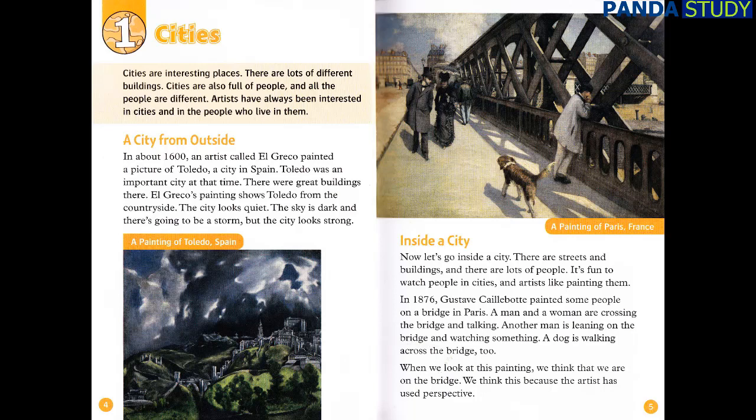Now let's go inside a city. There are streets and buildings, and there are lots of people. It's fun to watch people in cities, and artists like painting them. In 1876, Gustave Cailbot painted some people on a bridge in Paris. A man and a woman are crossing the bridge and talking. Another man is leaning on the bridge and watching something. A dog is walking across the bridge too. When we look at this painting, we think that we are on the bridge — because the artist has used perspective.